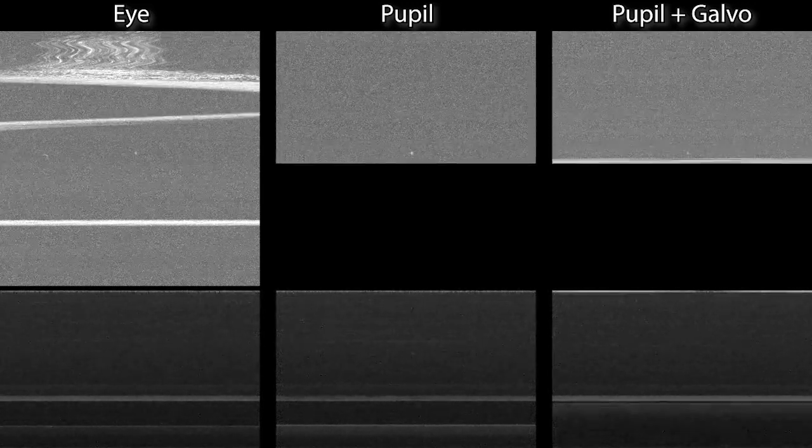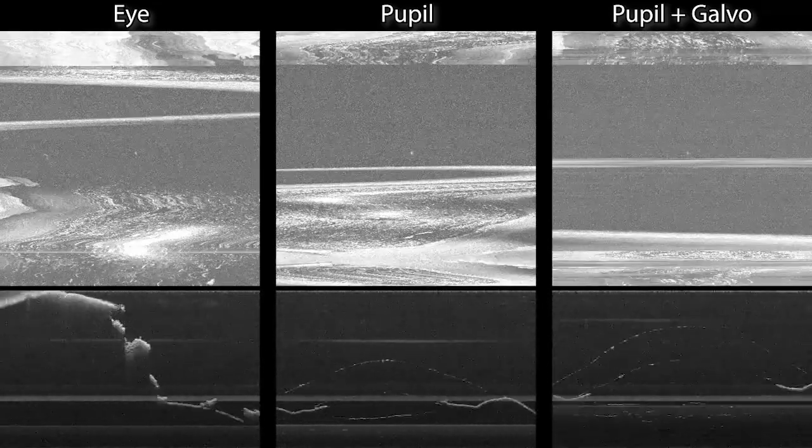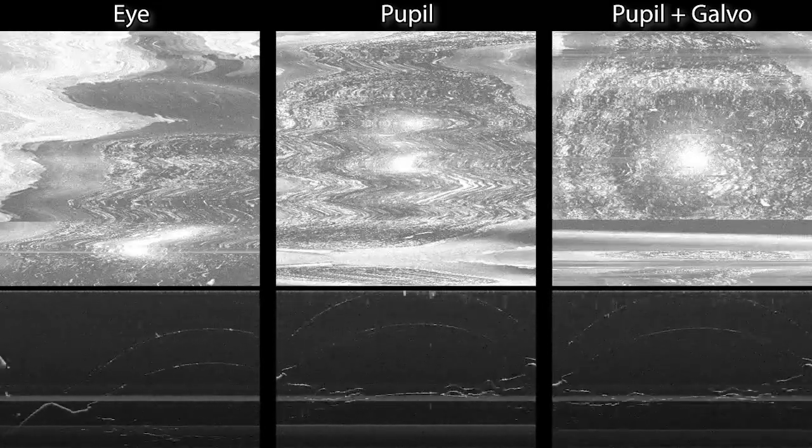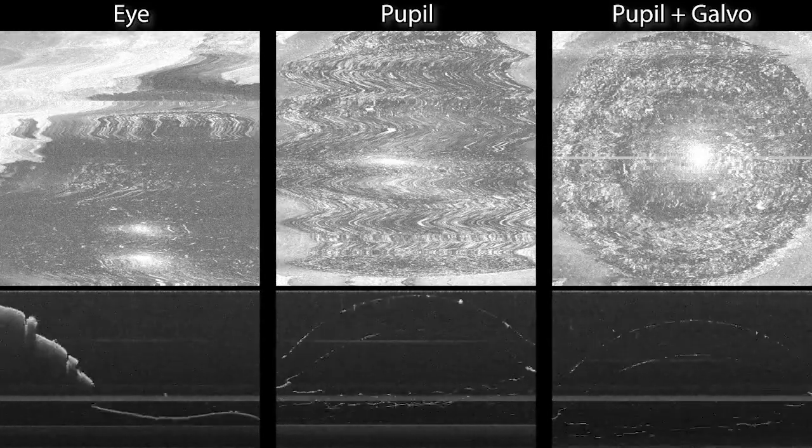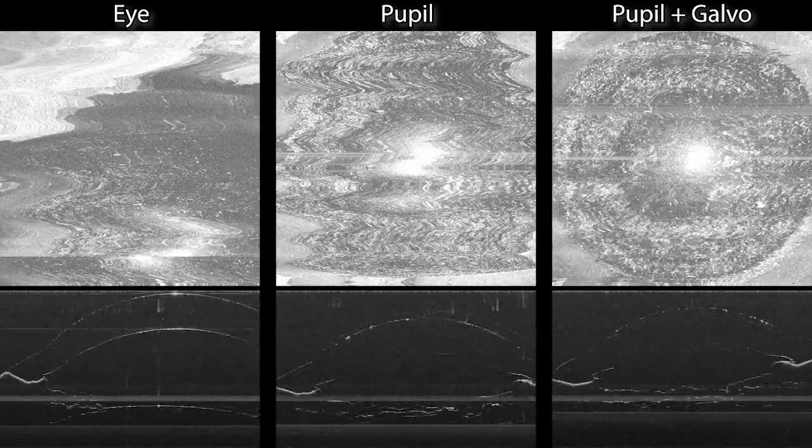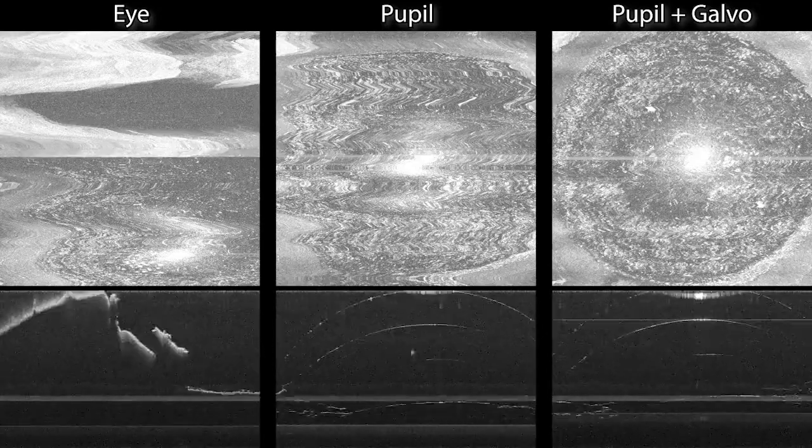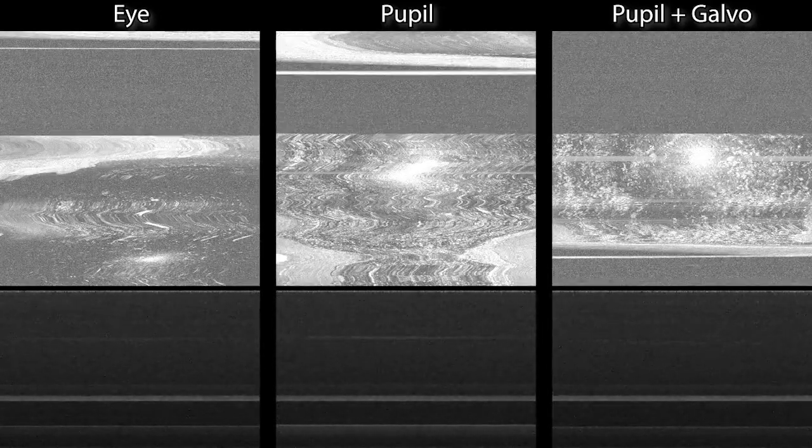The top row shows OCT ONFOS projections, whereas the bottom row shows the B-scan that is actively being acquired. Figure 11 shows the OCT volume from this series that exhibits the least motion artifact. Galvanometer aiming is key for obtaining a motion-stabilized volume.